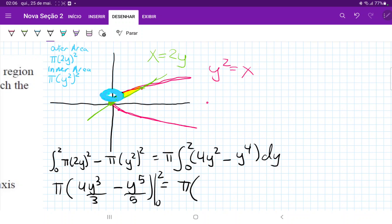Which is equal to pi times 2 cubed is 8. So 4 times 8 is 32. That is 32 over 3 minus 2 to the power of 5 is also 32. 32 over 5.